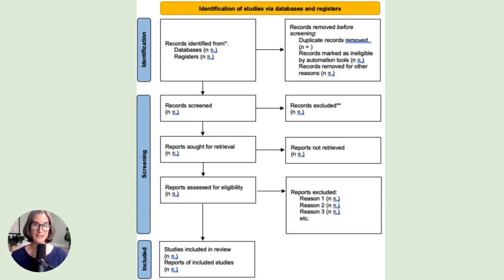PRISMA have updated their flowchart recently. The new version on their website talks about databases, registers, and reports. My suggestion is to delete the section about registers — you don't need that, just keep the database section. For the screening row, change 'reports' to 'records', which makes a lot more sense for what you're doing. Make this box work for you — you're talking about records, not reports or registers.